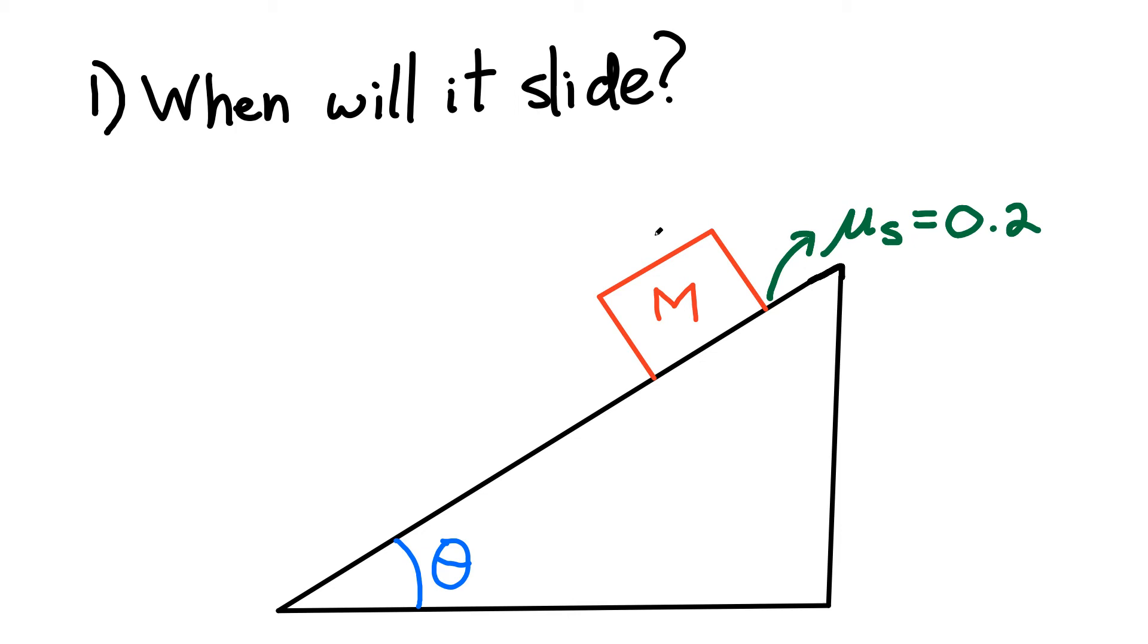Hi, today I want to look at a problem involving static friction and a block on a slope. So let's consider this block over here. And what I want to do is I want to find which angle over here is the block going to begin to slide.